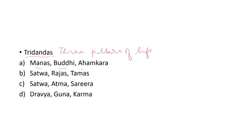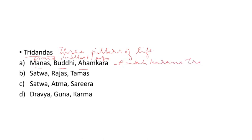The first option is Manas, Buddhi, Ahankara. What are Manas, Buddhi, and Ahankara? Manas is Mind, Buddhi is Intelligence, and Ahankara we can say is Ego. So Mind, Intellect, and Ego — these are in the invisible layer, perceived internally. These are called Antahkarana Traya: Manas, Buddhi, Ahankara.